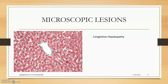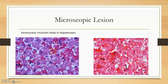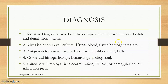Microscopic lesions: congestive hepatopathy and hepatic encephalopathy are common manifestations. Intranuclear inclusion bodies can be seen in the hepatocytes — these are large intranuclear inclusion bodies. These are the characteristic microscopic findings.